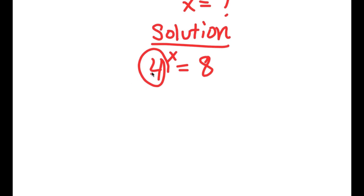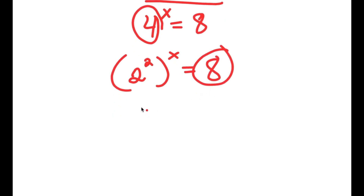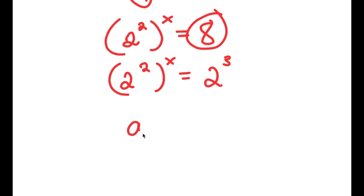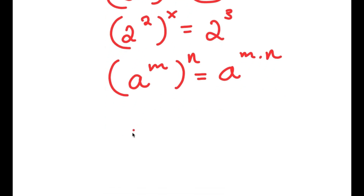Now 4 is the same thing as 2 squared, so I'm going to rewrite this as 2 squared to the power of x. And 8 is the same thing as 2 to the power of 3, so I replace 8 with 2 to the power of 3. I have 2 squared to the power of x is equal to 2 to the power of 3. Using the property a to the power of m to the power of n equals a to the power of m times n, I get 2 to the power of 2x.